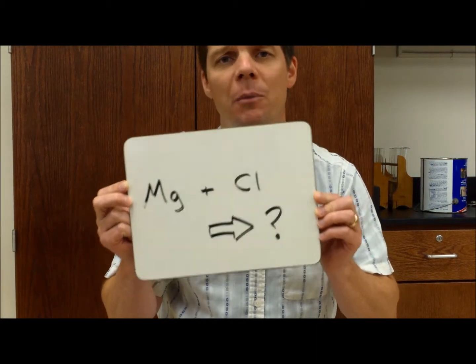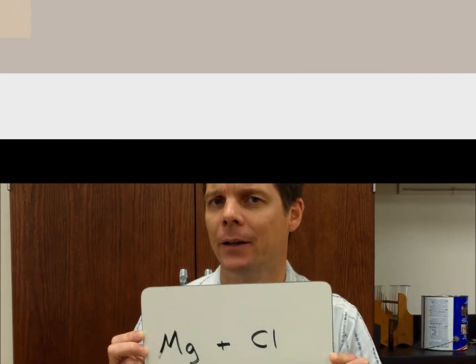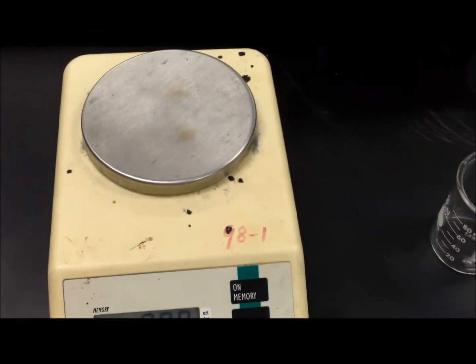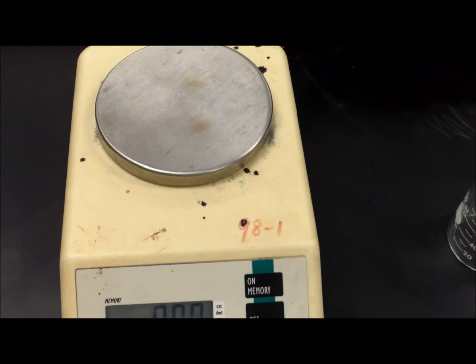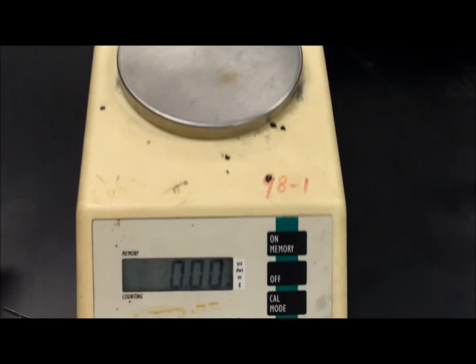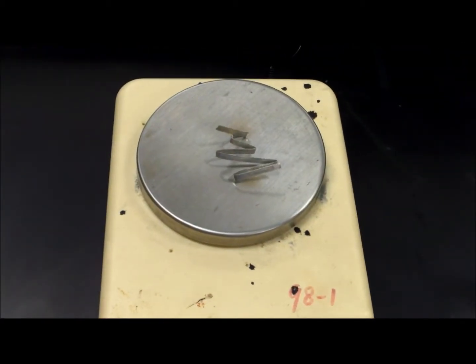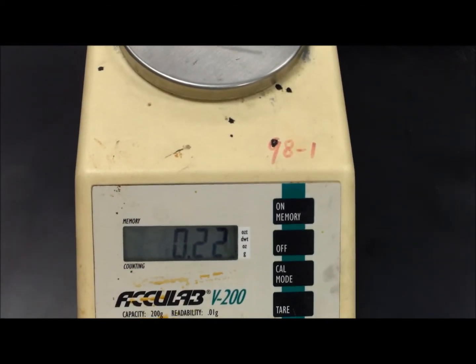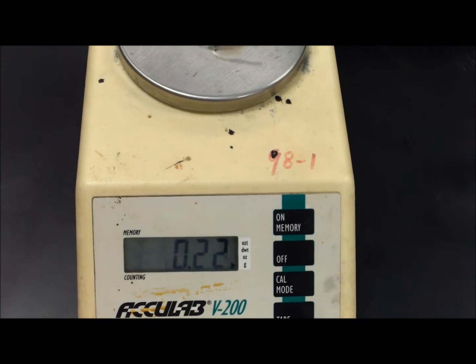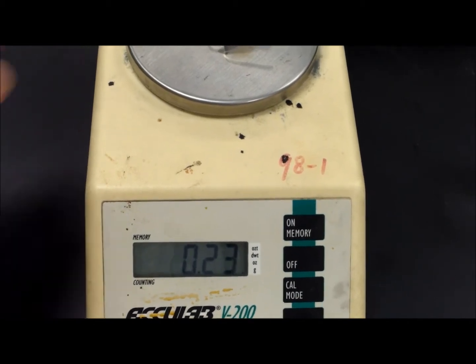The next step in our lab is to measure the masses of a few materials. First, I'm going to measure the mass of that magnesium ribbon. So we can see that the magnesium ribbon has a mass of 0.22 grams.